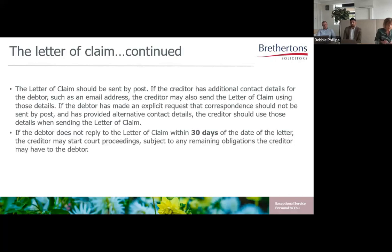With the exception of the statement of account, each of these documents is an annex of the protocol. The information sheet offers general guidance to the debtor and explains where debt advice can be sought, such as the CAB and StepChange. The reply form is for the debtor to respond — admitting the debt in full or in part, or disputing it entirely. The financial statement is where the debtor can share details of income and expenditure and put forward an offer of repayment. The letter of claim should be sent by first class post and by email if specifically requested. If the debtor does not reply within 30 days, the creditor may start court proceedings.